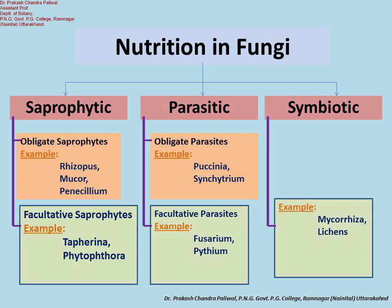The first type of parasites is obligate parasites. Obligate means true parasites — they require living hosts only. In the absence of a living host, these types of parasites cannot survive; they require another host. Examples are Puccinia and Synchytrium.